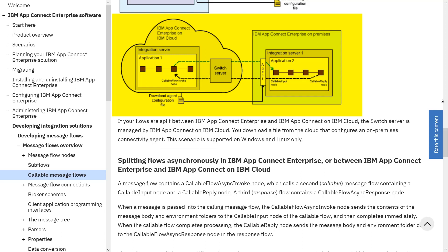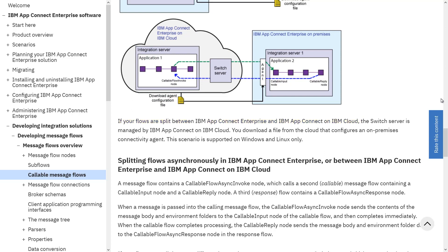As the wording says, if your flows are split between ACE and AppConnect on the cloud, the switch server is managed by AppConnect in the cloud. The most important point to emphasize is that the switch server is implemented free of charge by IBM for you in IBM Cloud. In this particular case, my application running in the cloud is going to be invoking the callable flow with a callable flow invoke, and my callable flow itself will be implemented on-premises, within Cloud Pak for Integration.